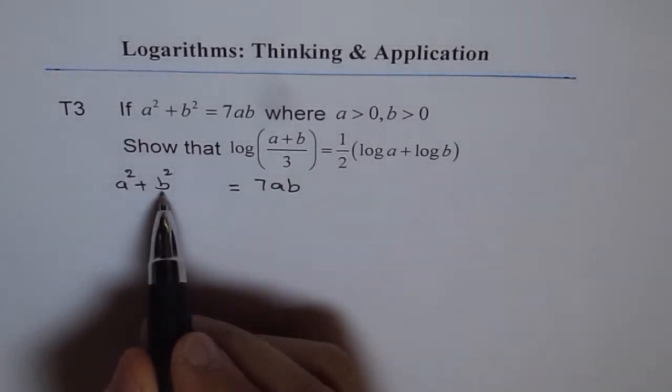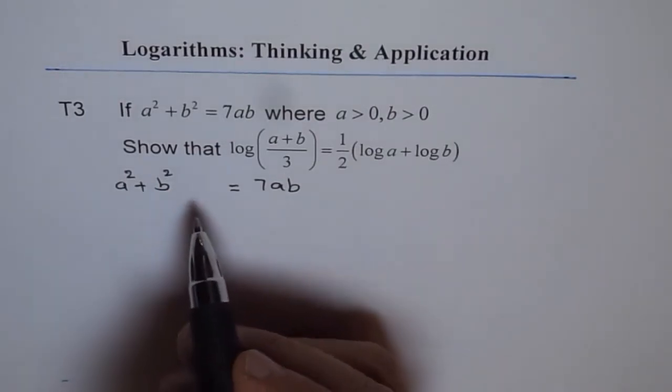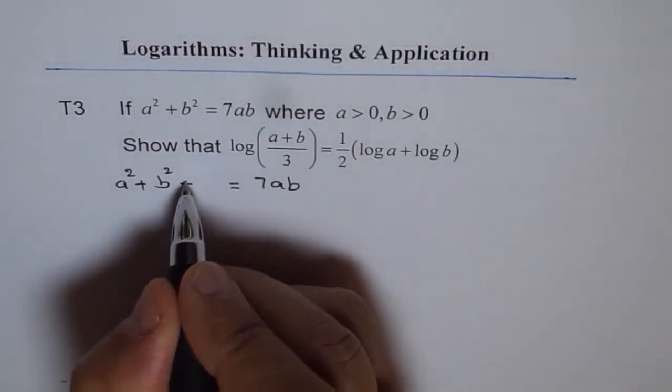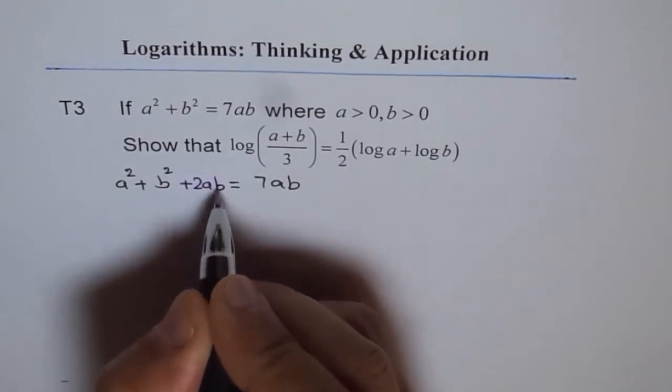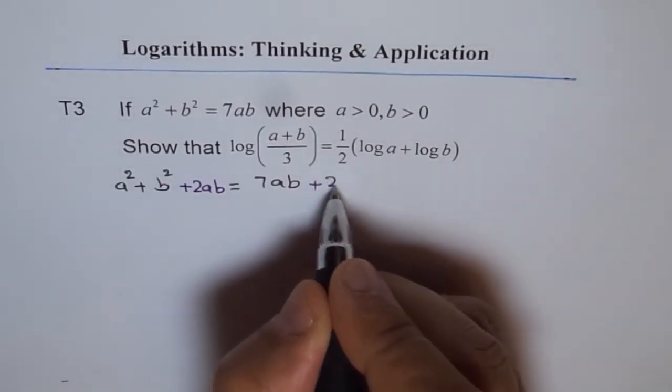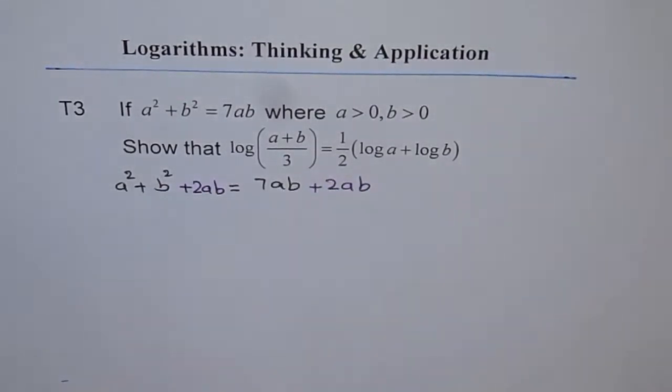Now, a plus b whole square is a square plus b square plus 2ab. But I don't have 2ab. I can always add. So let me add 2ab on left side and 2ab on the right side. Do you see that?